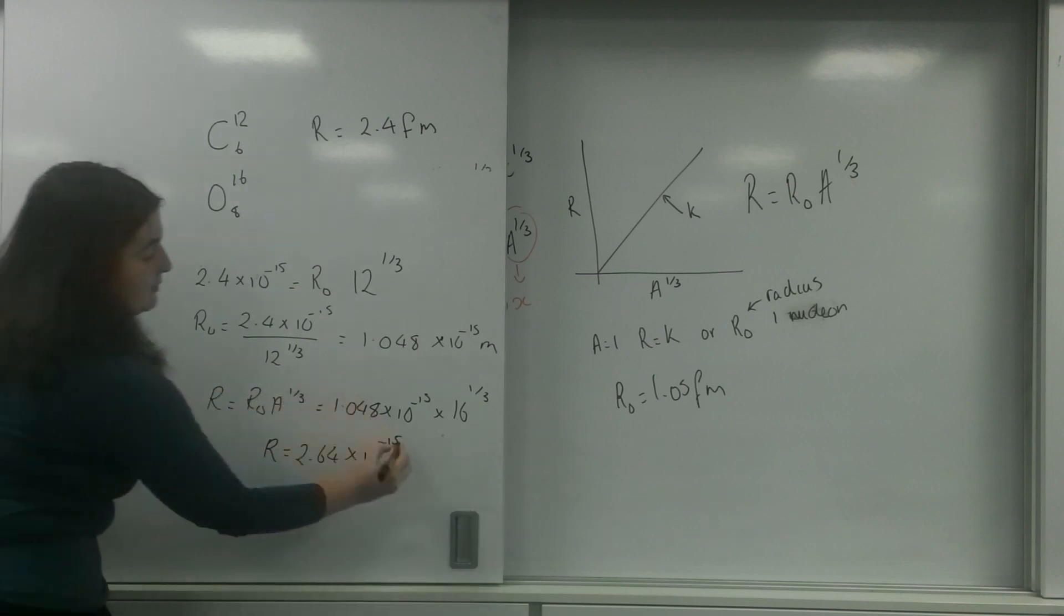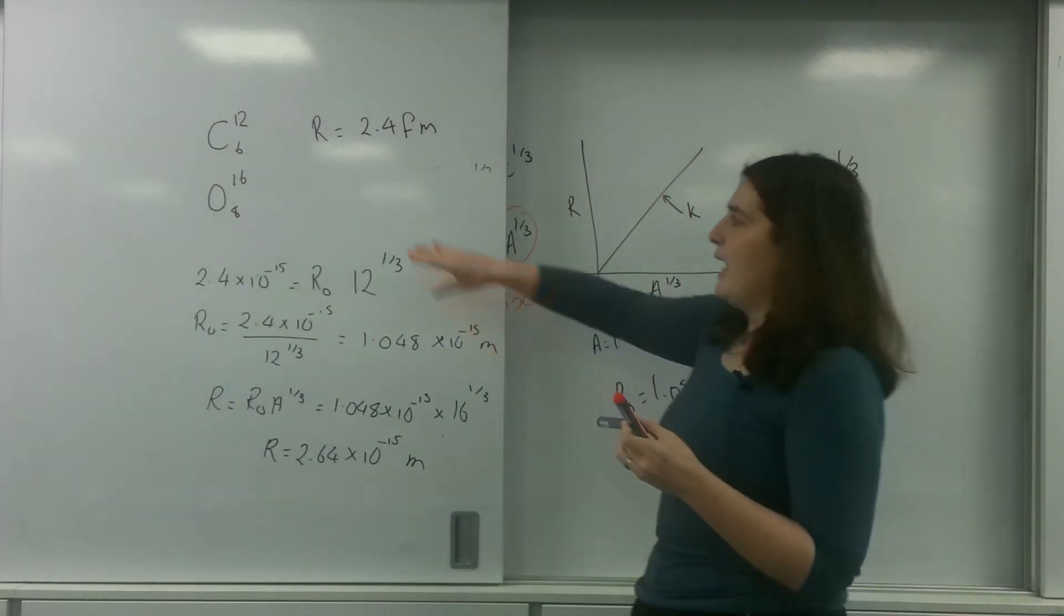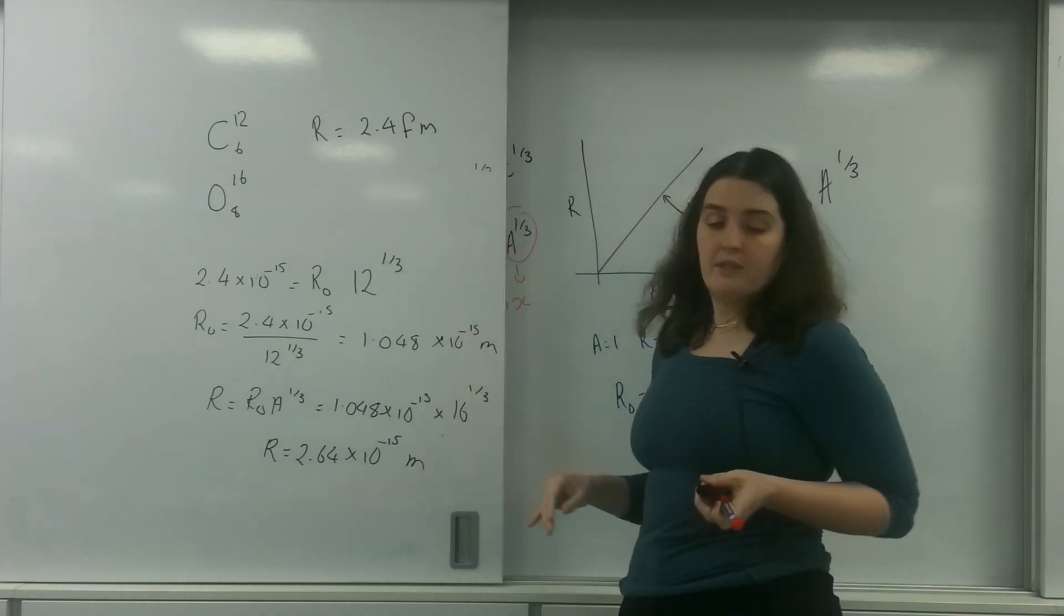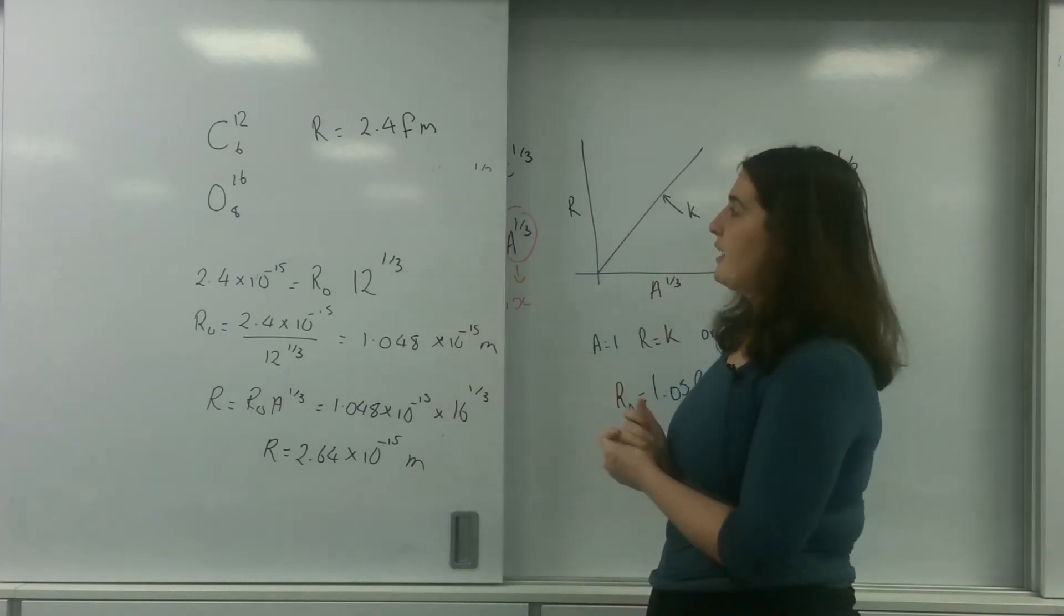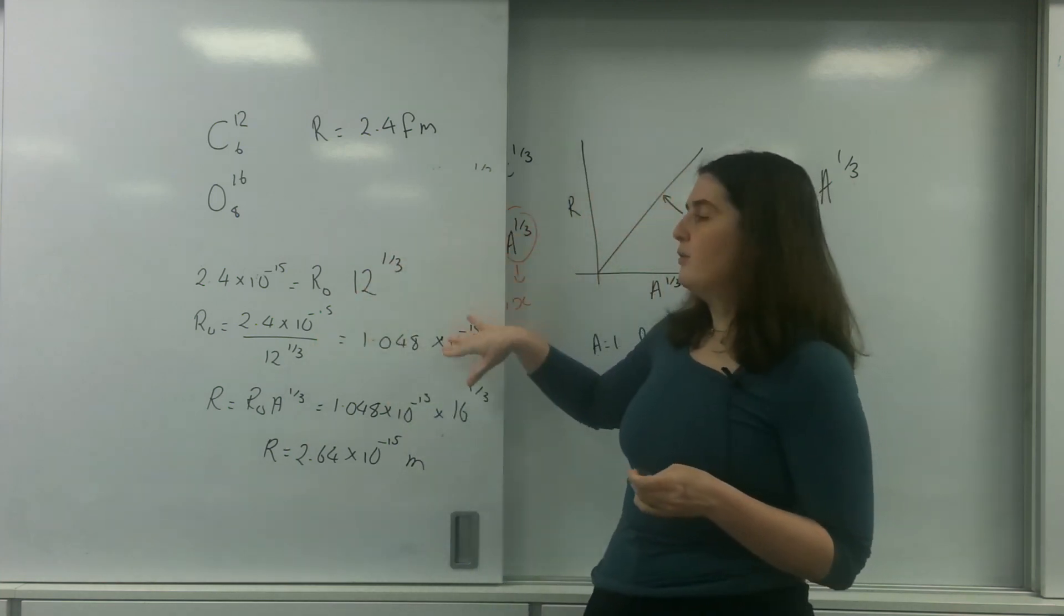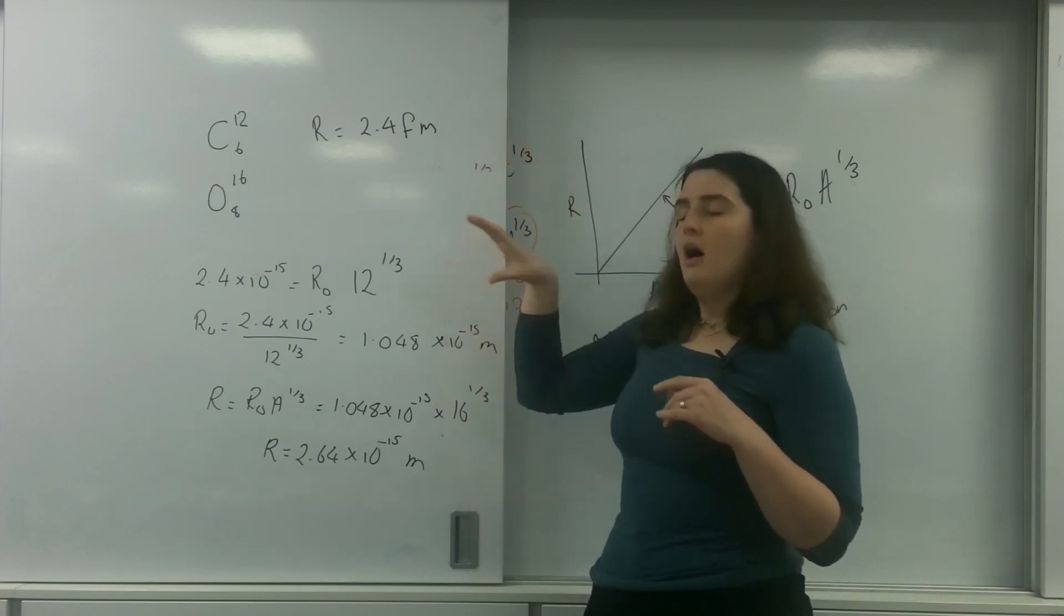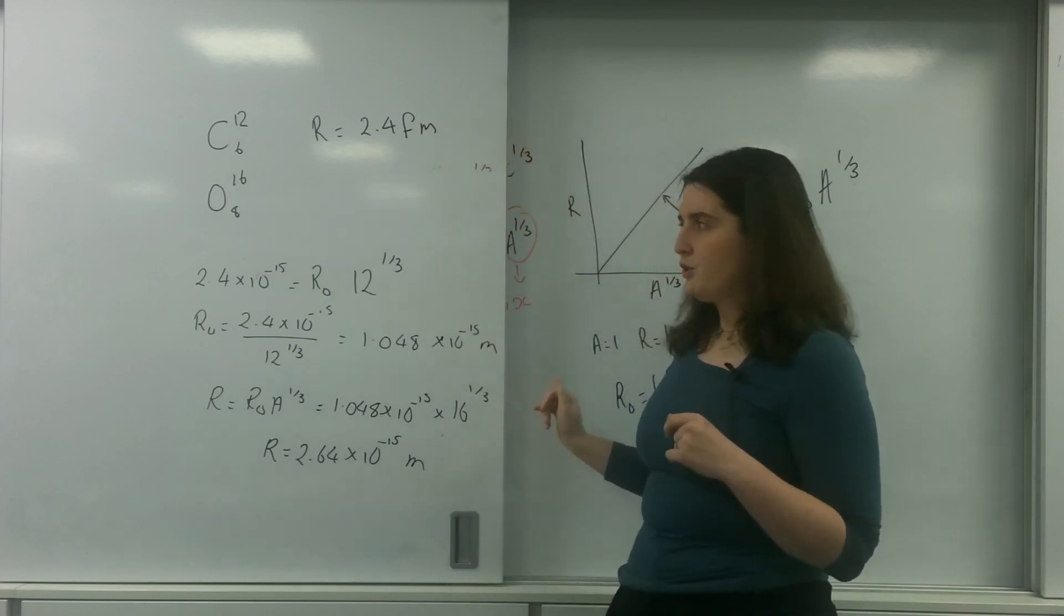As you can see here, my atom is bigger, 2.4 to 2.6, so I'm on the right track because my radius is bigger. But what I've done here is I've been able to find r naught using the initial bit of information that I have. And then using that r naught, I can go and find the radius of oxygen.